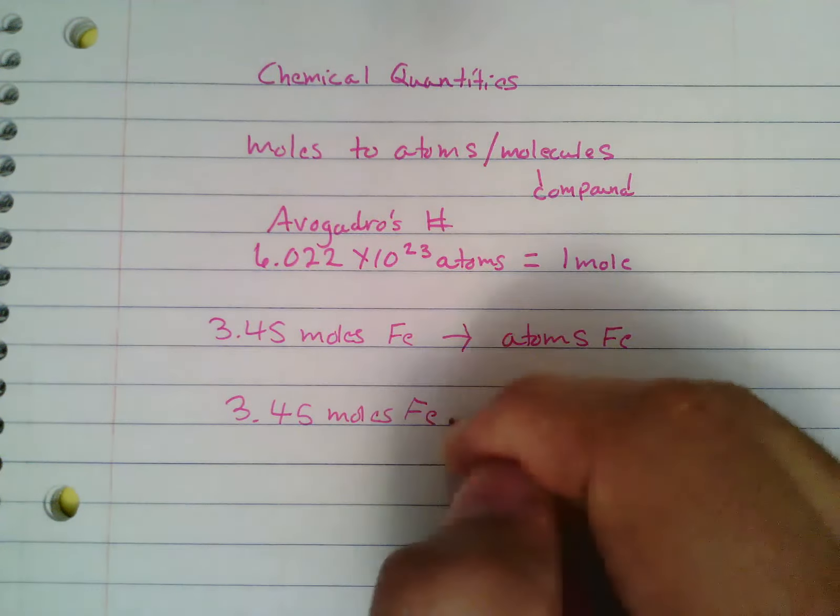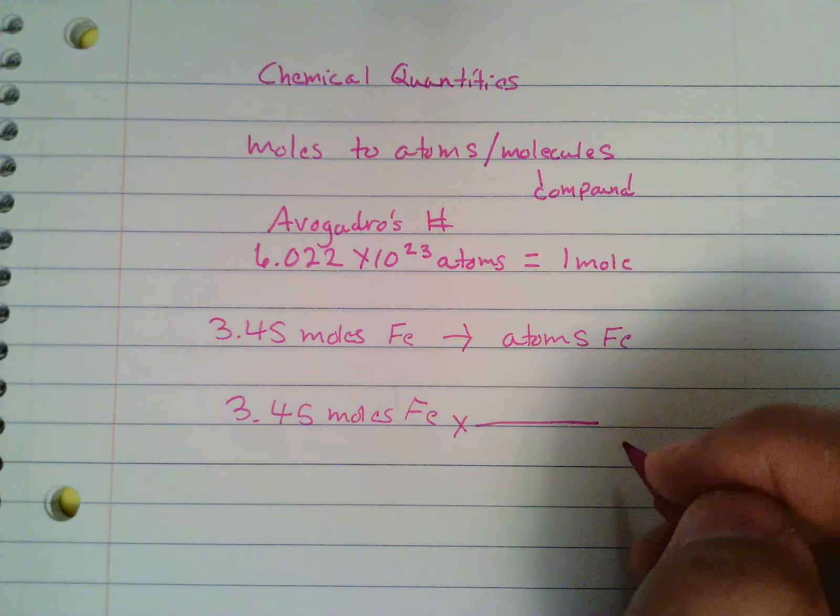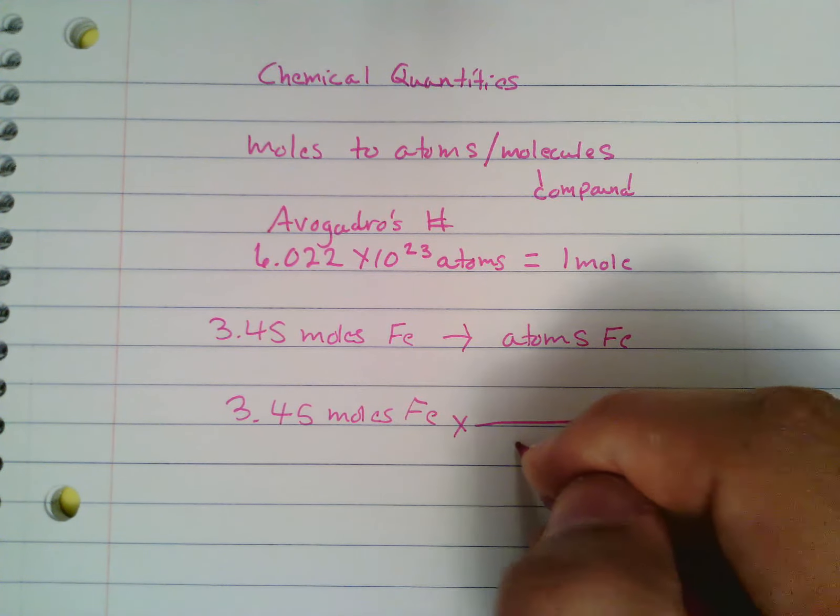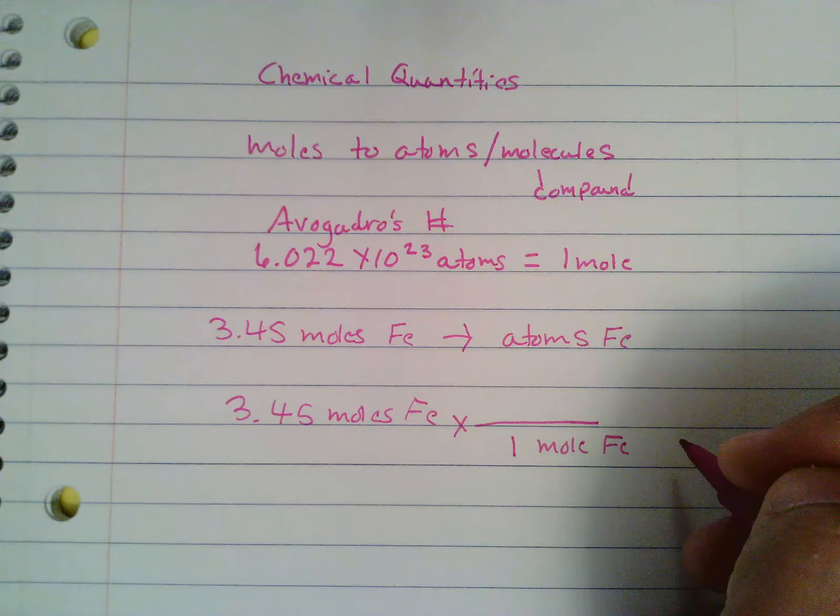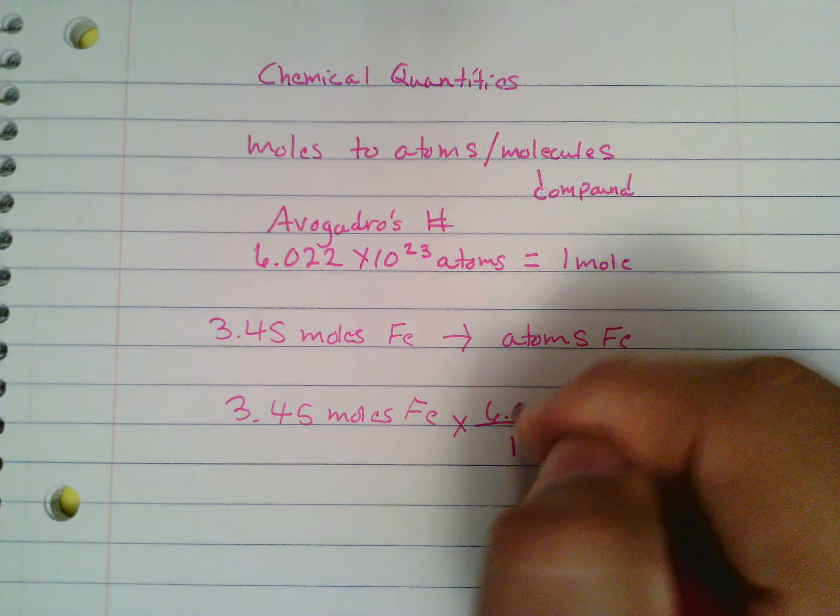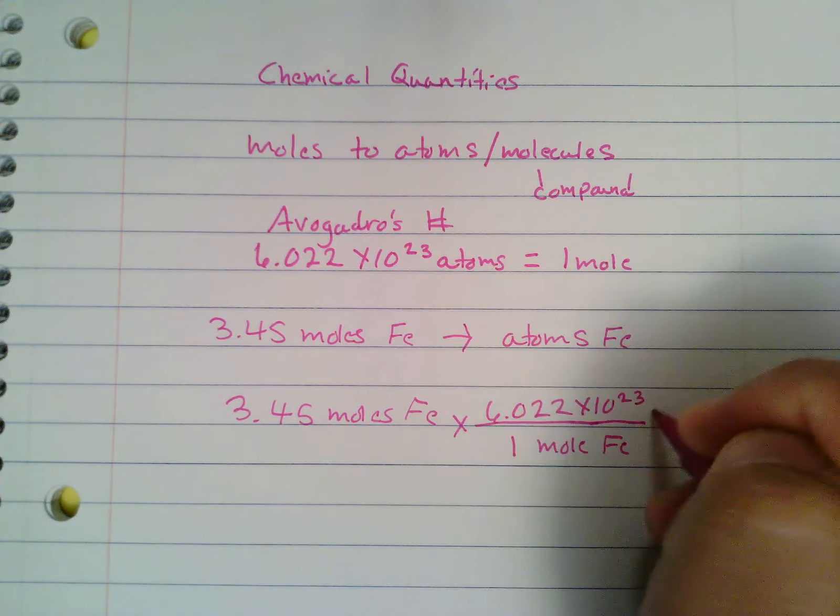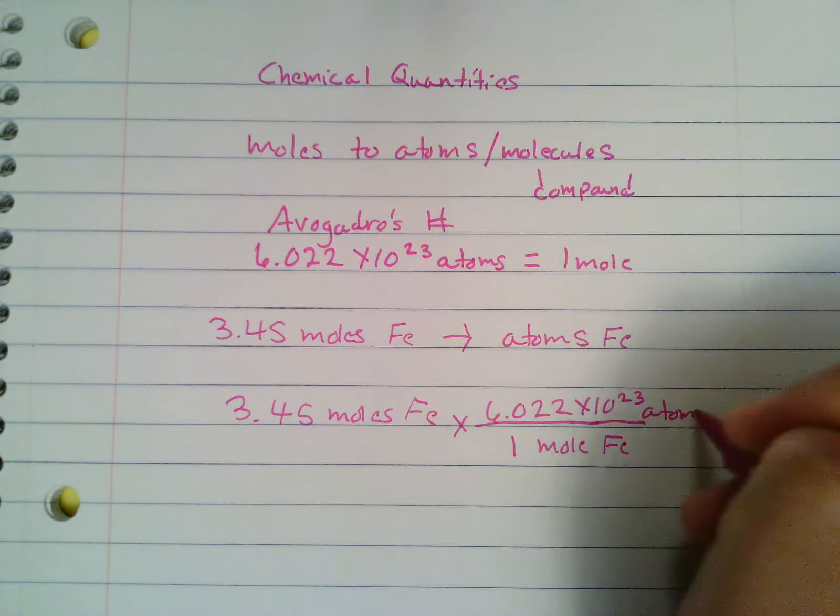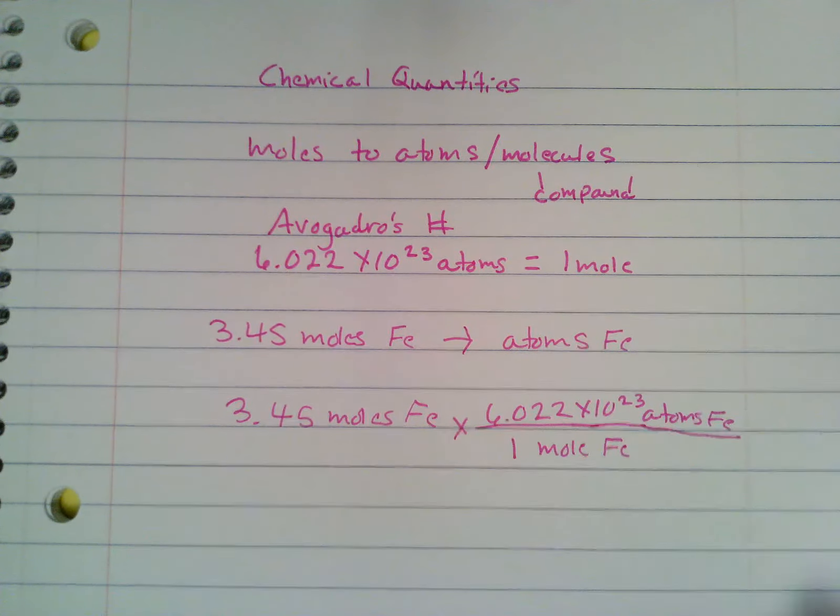Our conversion factor is going to be a little different in that now moles will go on the bottom because that's what we currently have. So that'll be one mole of Fe. And then over here we'll go Avogadro's number, which is 6.022 times 10 to the 23rd atoms of Fe.